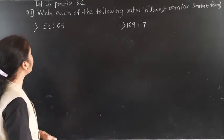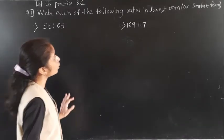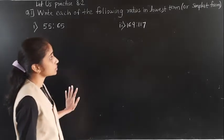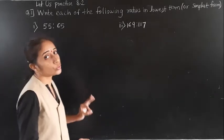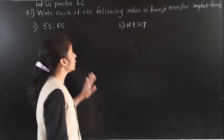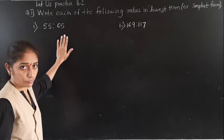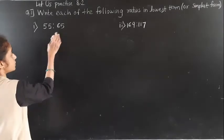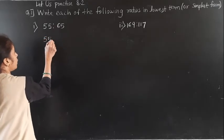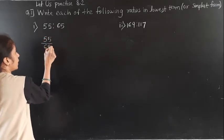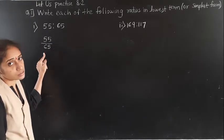Let's all practice 8.2 question number 1. Write each of the following ratios in lowest or simplest form. Now we go to do the lowest term. These are the given ratios. A ratio we can write as a fraction. So write this ratio as a fraction: 55 to 65, means 55 upon 65. Now this we have to write in lowest terms.